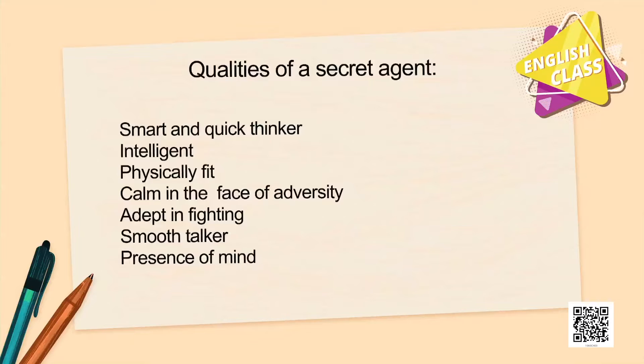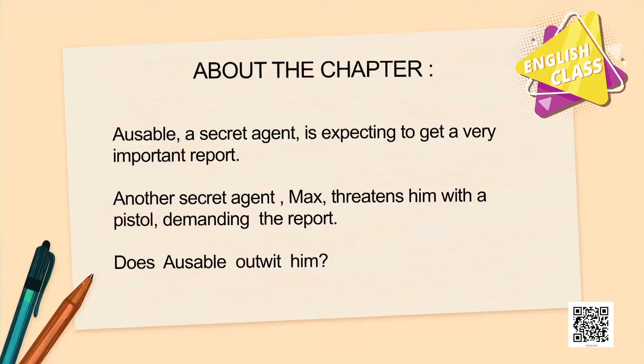Now that we have identified some secret agents, can you list out some of the characteristics a secret agent may have? He could be smart, intelligent, physically fit, a good speaker, communicate well, have presence of mind, and be a smooth talker. The chapter is about Ausable, a secret agent who is expecting a very important report. Max, another secret agent, comes and demands the report from him. Would Ausable be able to outwit him? Let us see.